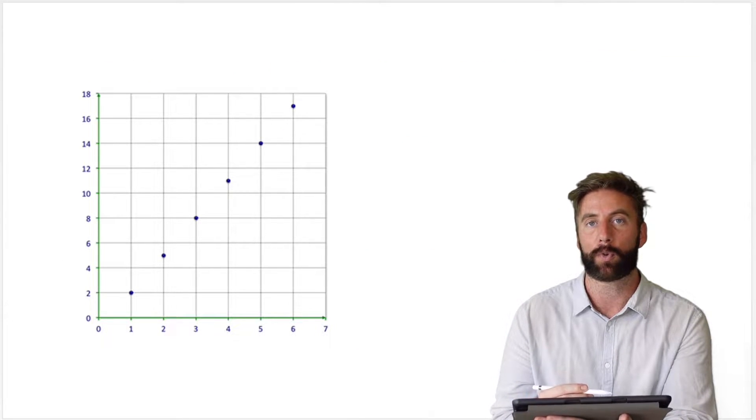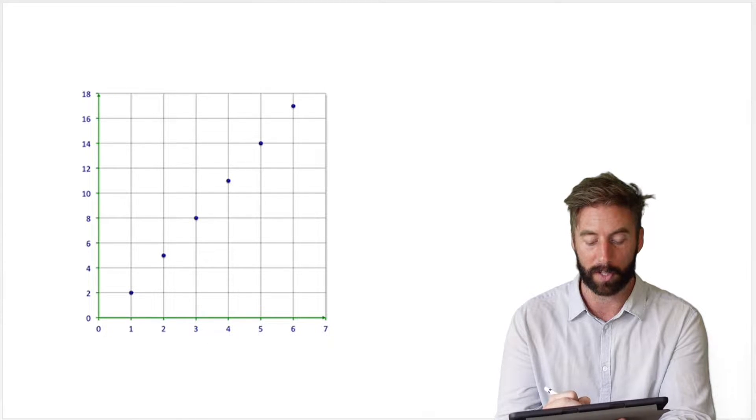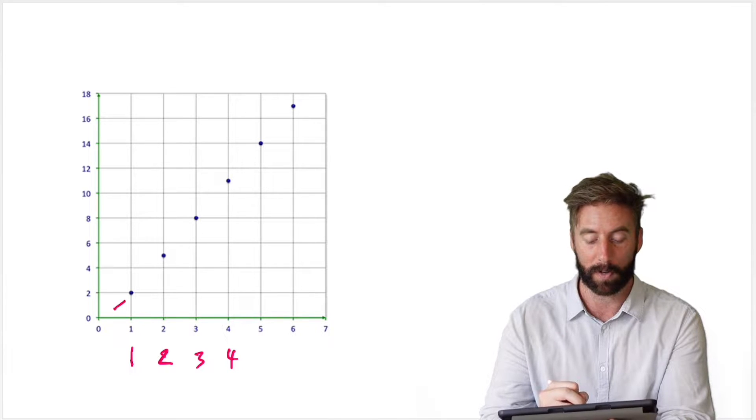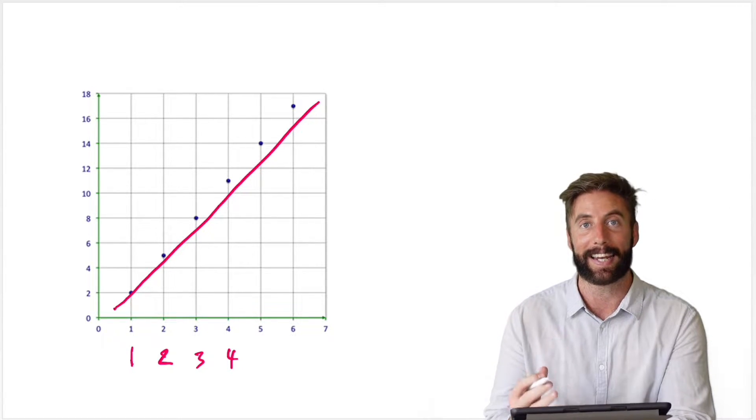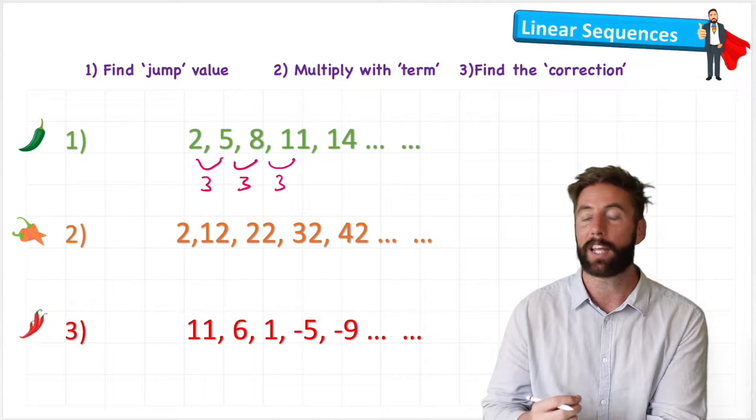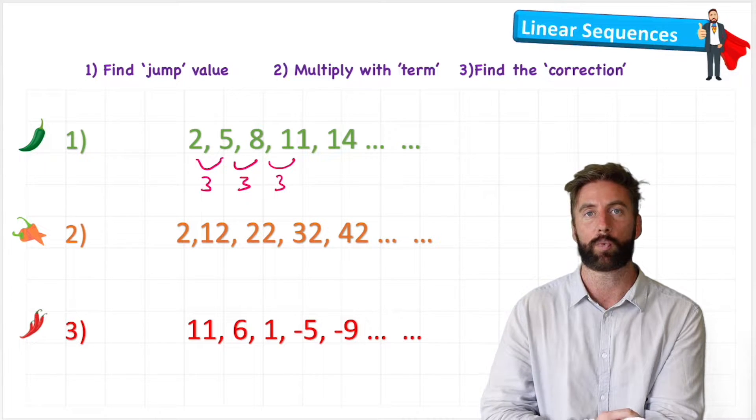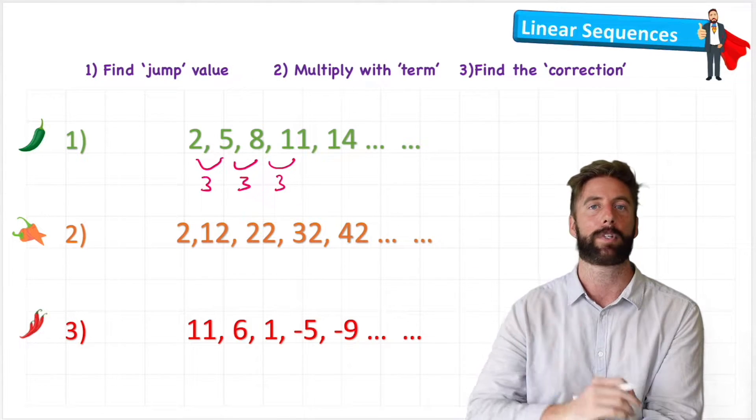And therefore, if a linear sequence was plotted onto a graph like this, and these were our terms - the first number, the second, third, fourth - our sequence of numbers would end up being a straight line, a linear line. Now the gap between the numbers can change; it can be 3, it can be 10, it can be a million, it can be minus a million. But all linear sequences will have the same gap between each of the numbers.